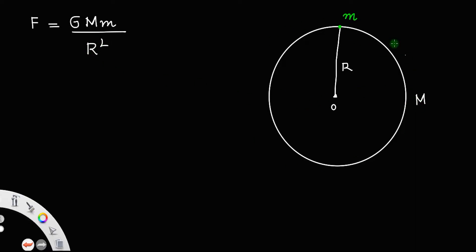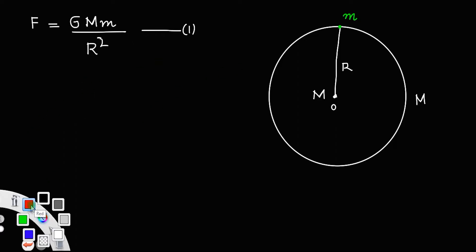We know the entire mass of the earth is concentrated at the point O, and the distance between these two masses is r. So definitely the force between them is GMm/r² by Newton's gravitational law of attraction. The direction of the force will always be towards its center, and we know the force exerted by the earth on any mass m is its weight.